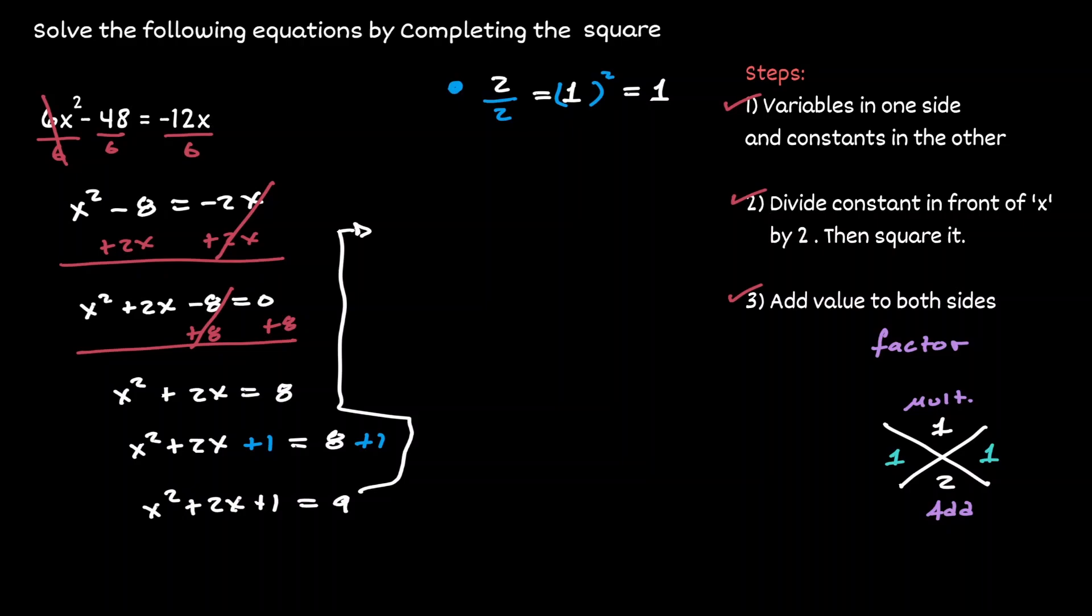The left hand side, now we can write it in factored form as x plus 1 times x plus 1. And the right hand side is still 9. But when you have the same expression multiplied by itself, that's the same as that expression raised to the second.